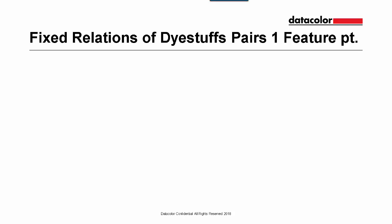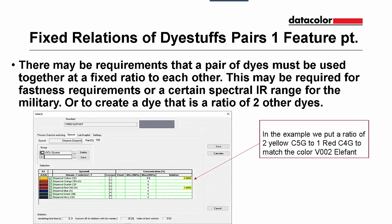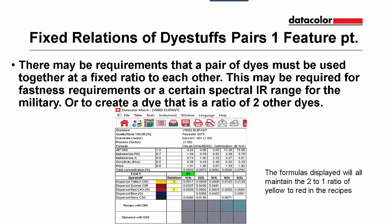The option fixed relations of dye stuff pairs is worth one feature point. There may be a requirement that pairs of dyes must be used together at a fixed ratio to each other. This may be required for fastness requirements or certain spectral IR ranges for the military, or it could be to create a dye that is the ratio of the two other dyes. In this example, we put a ratio of 2 yellow C5G to 1 red C4G to match the color V002 elephant. Our list of formulas displayed will maintain the 2 to 1 ratio of yellow to red in all the recipes.